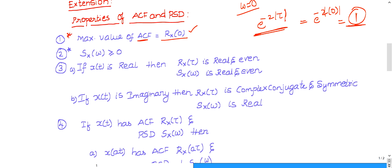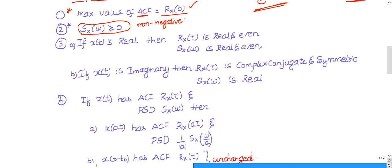Property 2: Power spectral density is always non-negative — it can be zero or positive, but never negative. Three to four GATE questions are based on this property. Property 3: If a given signal is real, then both the autocorrelation function and the power spectral density will be real and even.